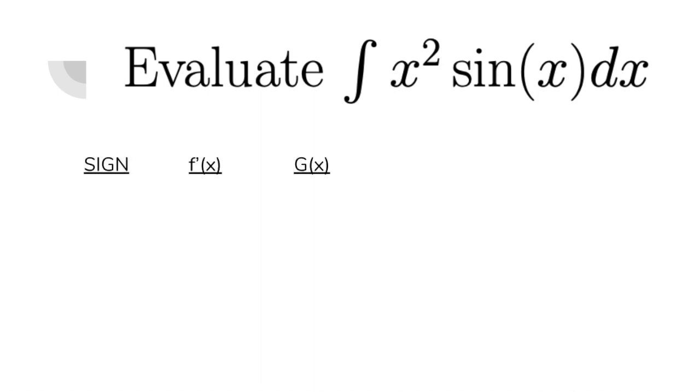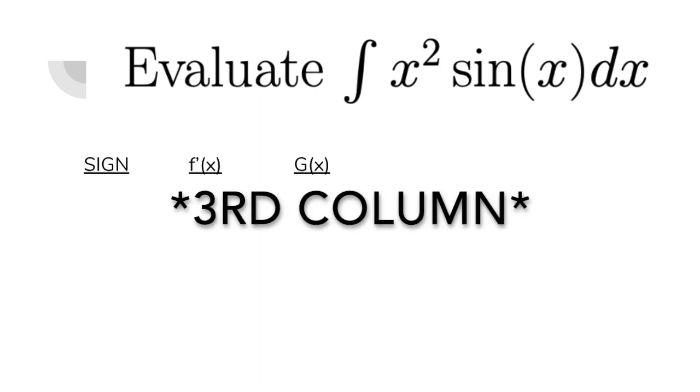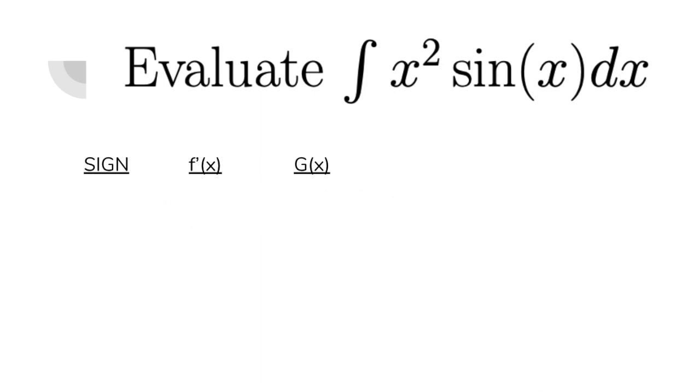The first column is a sign column, and it alternates between plus or minus signs. The second column is what we're going to call the derivative or the f prime column, and that's where I'm going to take my derivative repeatedly all the way until zero. The third column, I call it capital G of x, which I meant to stand for the anti-derivative of the second function.